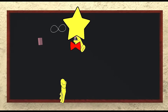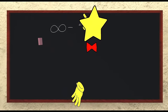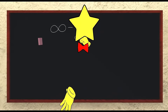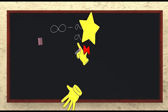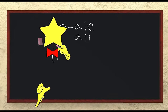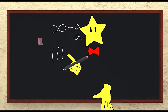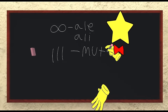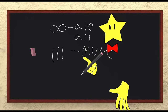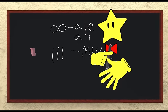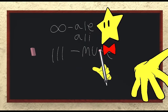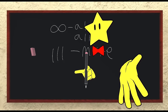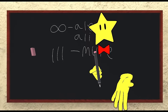Next we have ale, drawn with an infinity symbol, spelled A-L-E — you'll also see it spelled A-L-I. Then we have mute, drawn with three vertical lines, spelled M-U-T-E. Mute refers to a lot of something — a very large number of a thing or a large amount. It can make something more intense, more powerful, more strong — it increases the word it modifies.